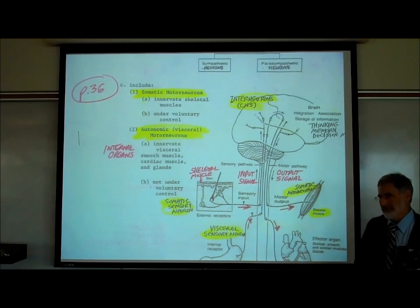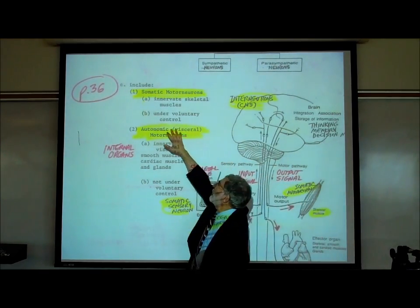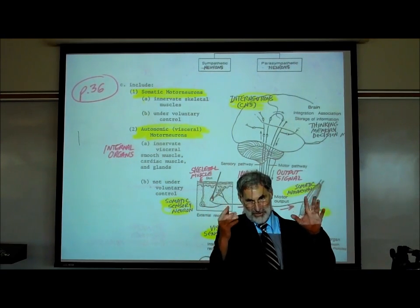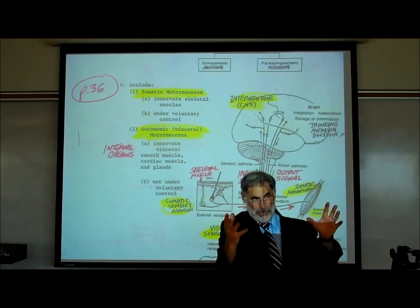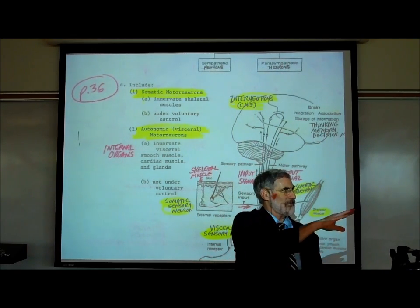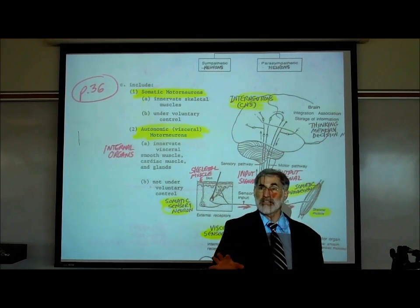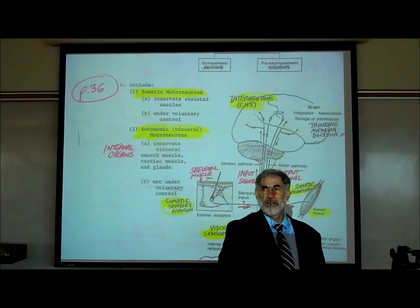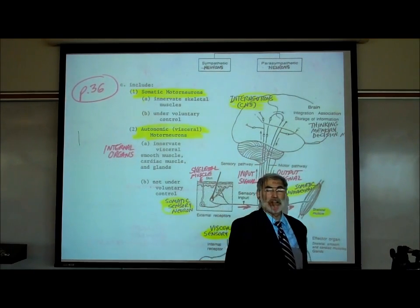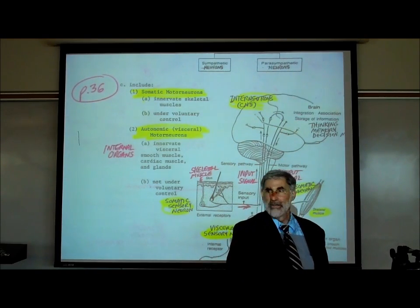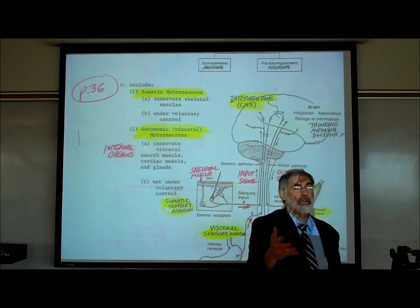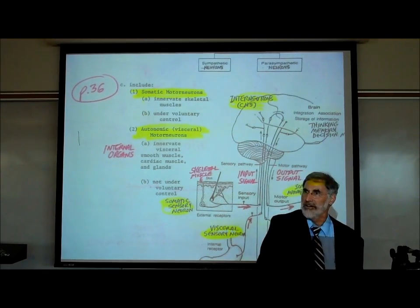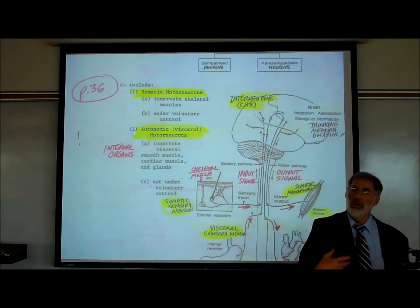Let's test this. Somatic motor neurons control skeletal muscle under voluntary control — wiggle your fingers: go, stop. You have good control. Now try to speed up your heart rate — slow it down, stop it. How did that go? Try to secrete bile from your liver, or start salivating on command and stop. We don't seem to have voluntary control over our internal organs.